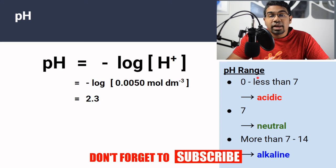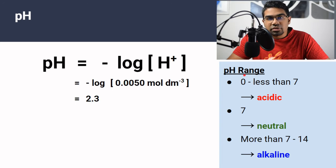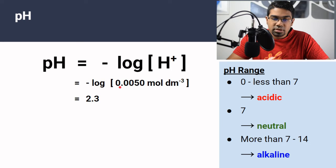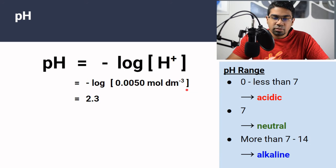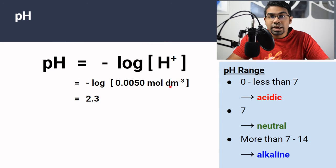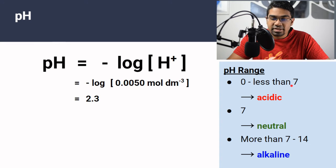For example, if I had an acidic solution with a concentration of hydrogen ions of 0.005 mol/dm³, then to calculate the pH, all I have to do is take minus log of that concentration: minus log 0.005. If we put this into the calculator, we get a value of 2.3. So the pH of a solution with [H⁺] = 0.005 mol/dm³ is 2.3, which is in the acidic range since it is less than 7.